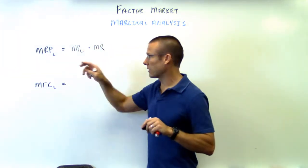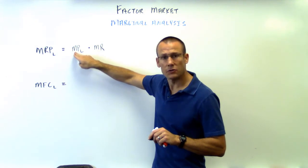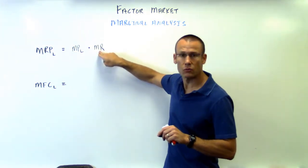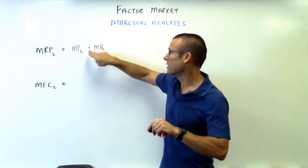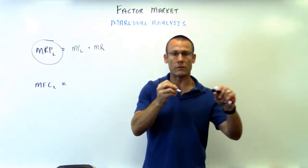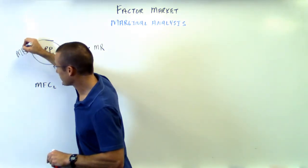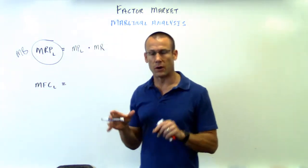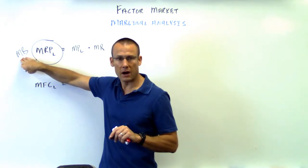Let's get the big picture. Marginal revenue product of labor: additional products a laborer can make, times the additional revenue each product gets. Put those together and you've got the marginal revenue product of labor, which is the marginal benefit of labor to the firm. From the firm's perspective — theory of the firm — that's the marginal benefit of hiring more workers.